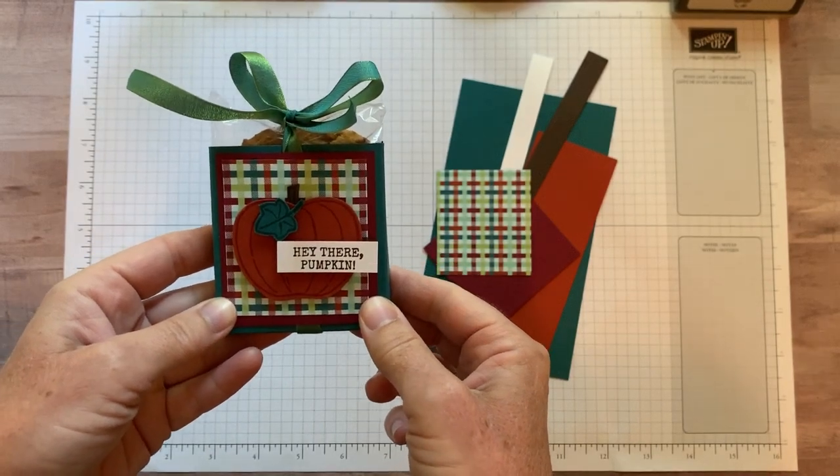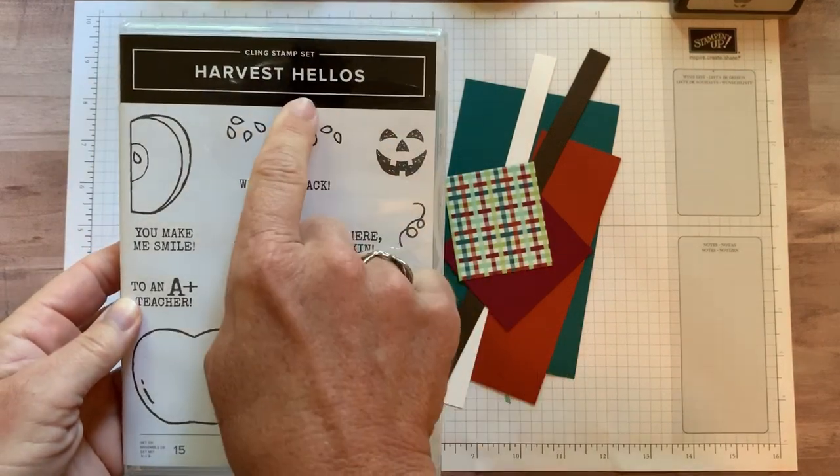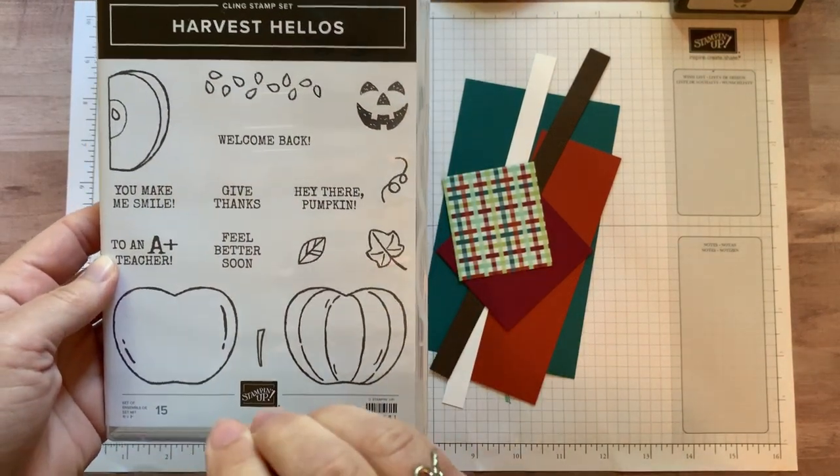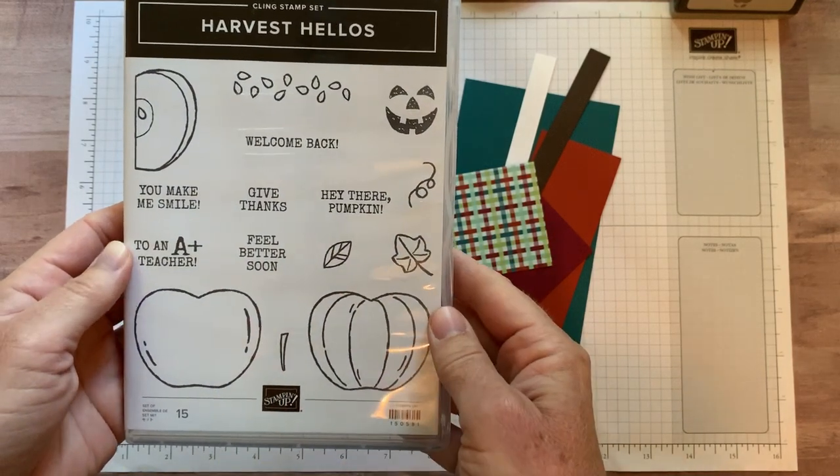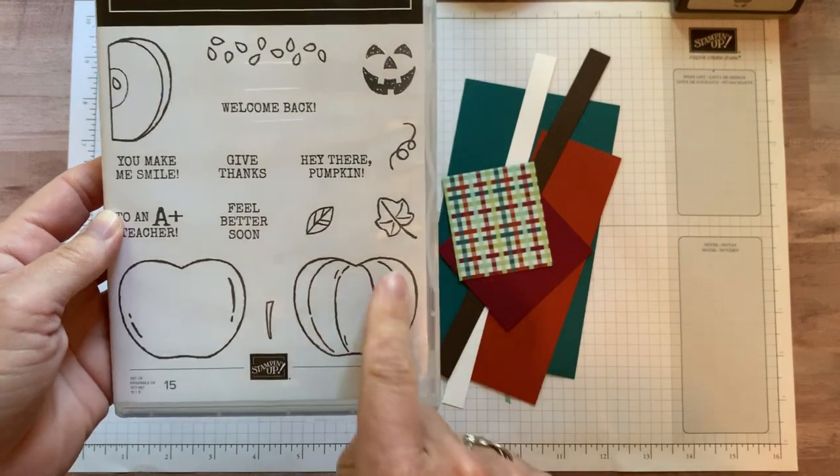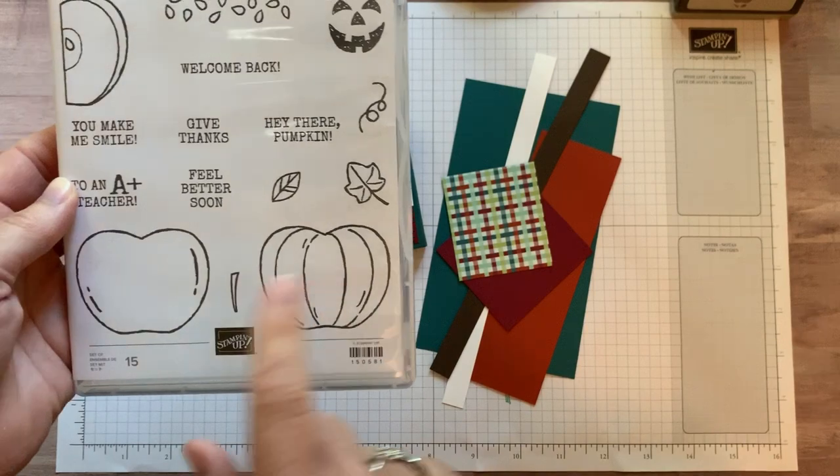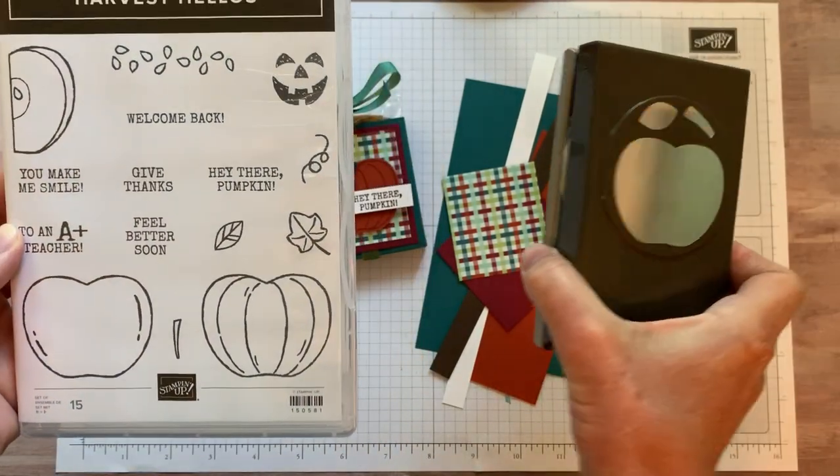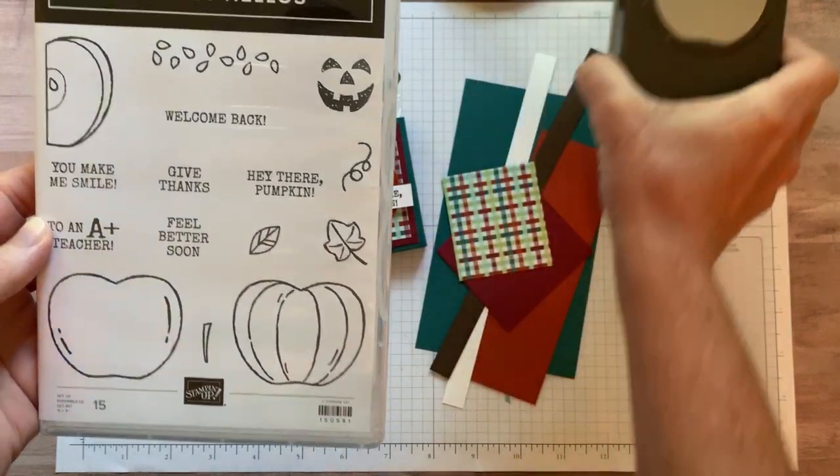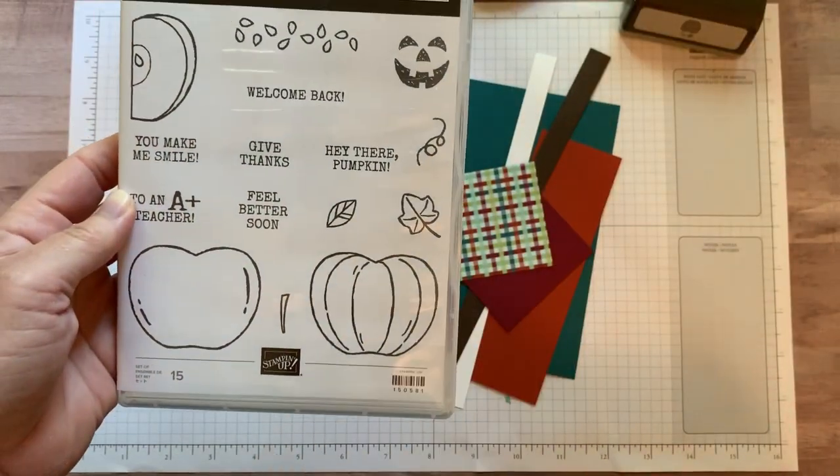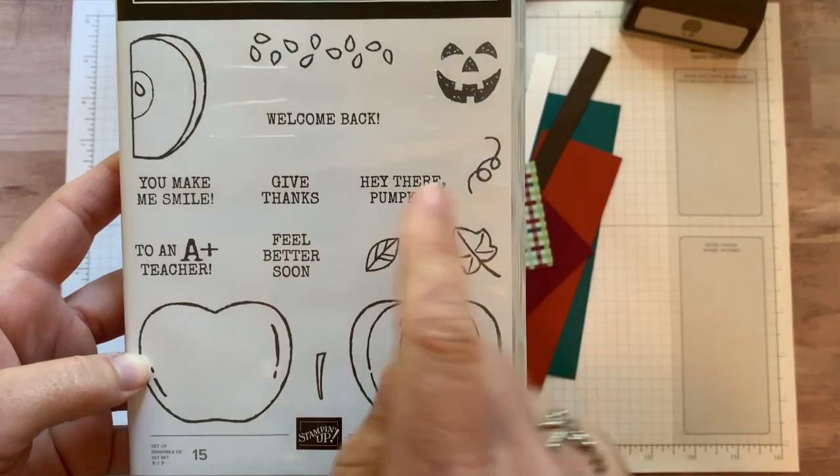Let me show you, I think we'll start with the stamp set that inspired this project. This is the Harvest Hello stamp set and I love that this is a little bit different than we've had before in terms of the theme or imagery in a stamp set. This pumpkin image right here is what I used on that, but then there's also an apple because we have a coordinating apple builder punch that works really well with that pumpkin image as well. It's very versatile, I would say.